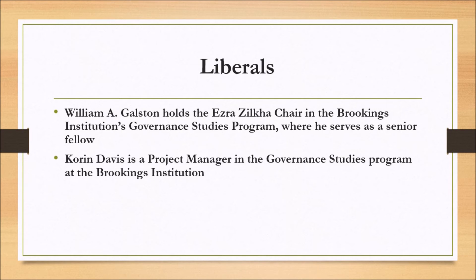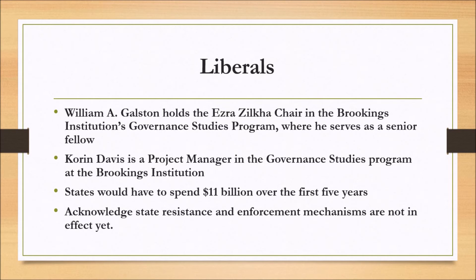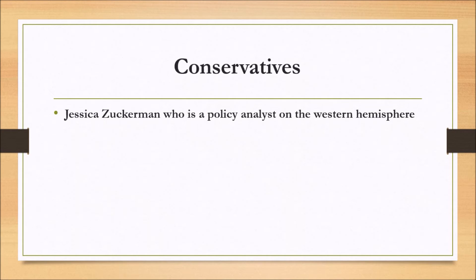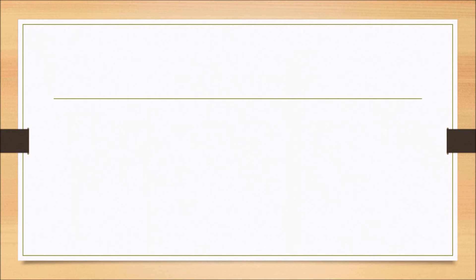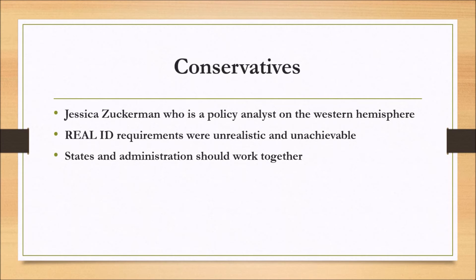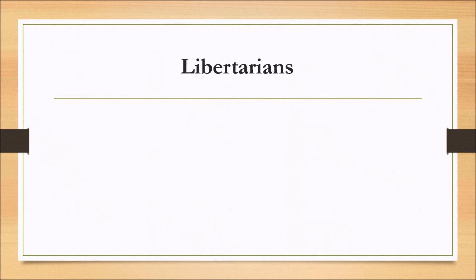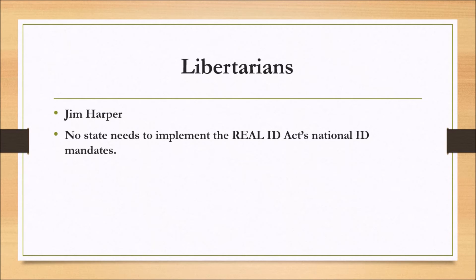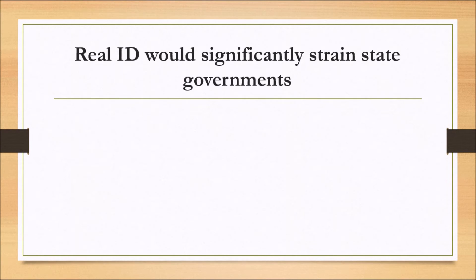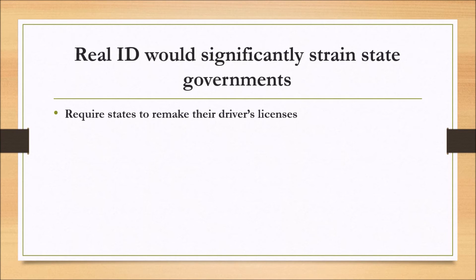Liberals acknowledge state resistance and enforcement mechanisms are not in effect yet. Conservatives believe that the requirements are unrealistic and unachievable and that the state and administration should work together. Libertarians say that no state needs to implement the Real ID Act's national ID mandates. The Real ID would significantly strain state governments. It would require the states to remake their driver's licenses, restructure many of their computer databases and other systems, create an extensive new document storage system, and considerably expand their security measures.